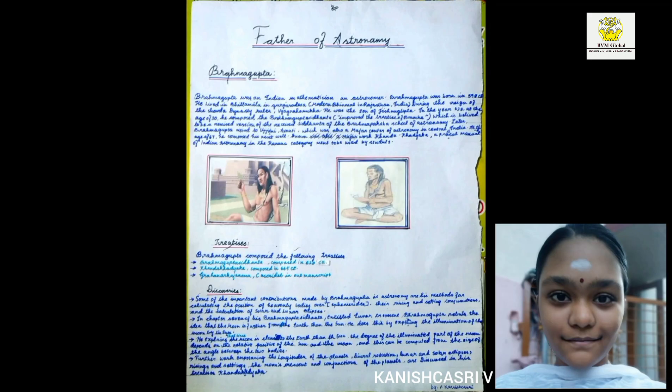Good morning. I am Kanishka Sri of Class 8, here to talk about Brahmagupta's biography. Brahmagupta was born in 598 CE. He was the son of Jisnugupta. Brahmagupta composed the Brahmasphutasiddhanta. His discoveries include the longitudes of the planets, their rising and settings, the moon's crescent, and conjunctions of the planets.